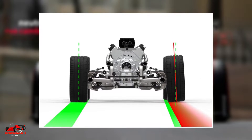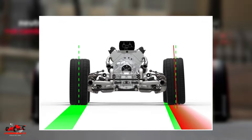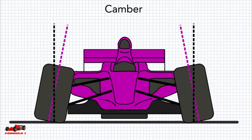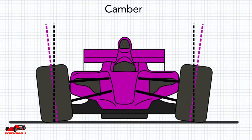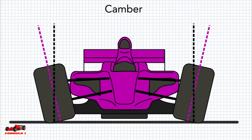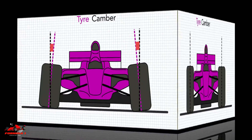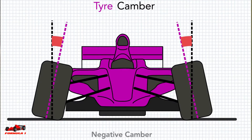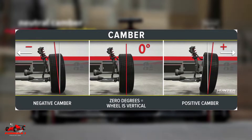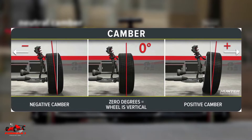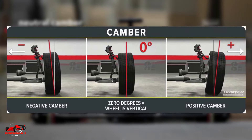Camber is a term that is used in automobiles in general. It refers to the angle of the wheels in relation to the vertical. When the tires of an automobile lean inward, it is known as negative camber. And when the tires lean outward, it is known as positive camber.